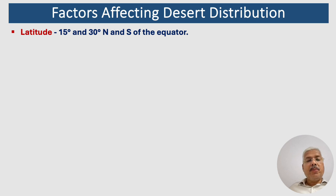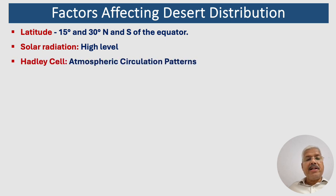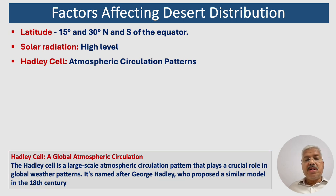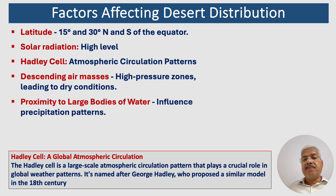Factors affecting desert distribution: the first is latitude. Deserts are often found at latitudes between 15 and 30 degrees north and south of the equator. These regions experience high levels of solar radiation and descending air masses that create dry conditions. Earth's atmospheric circulation patterns, such as Hadley cells, contribute to the formation of deserts. Mountains or other geographical features can also create rain shadows, leading to arid conditions in certain regions.